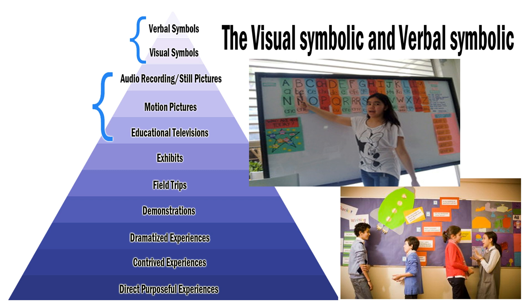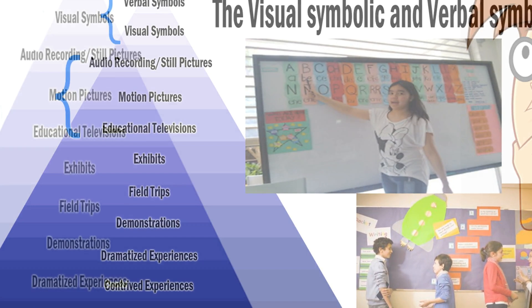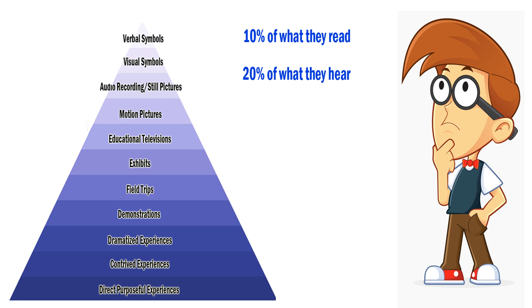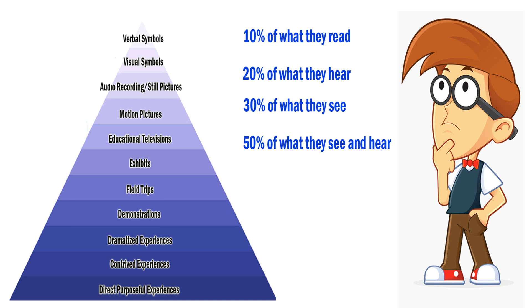People generally remember 10% of what they read, 20% of what they hear, 30% of what they see, 50% of what they see and hear, 70% of what they say and write, and 90% of what they do as they perform a task.